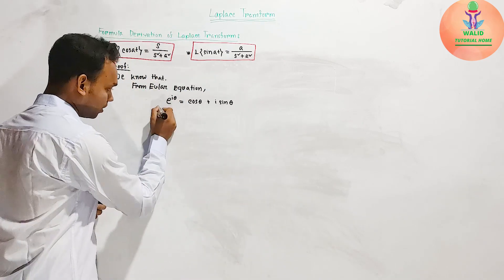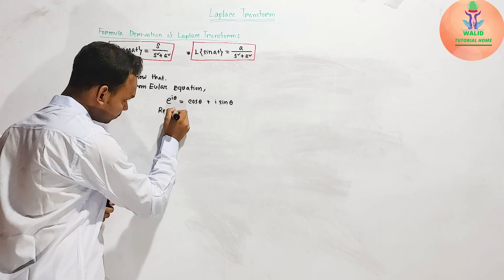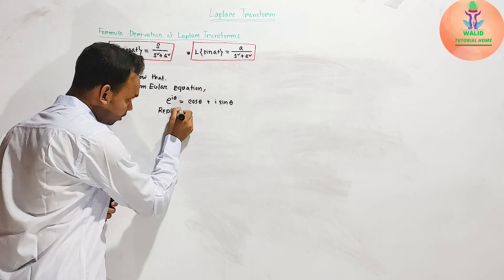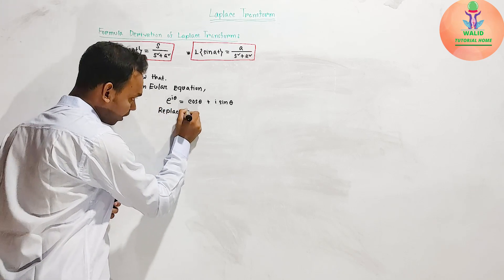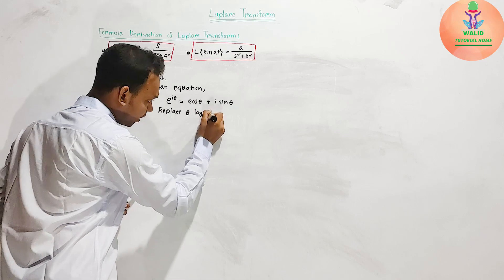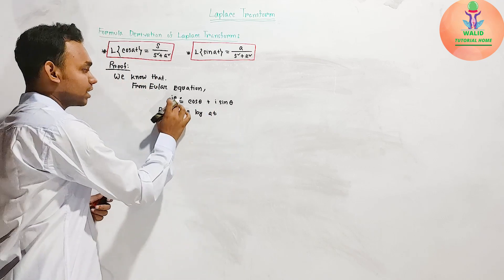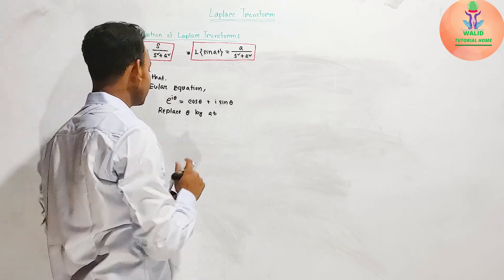If we replace θ by at, we get e to the power i·at equals cos(at) plus i·sin(at).